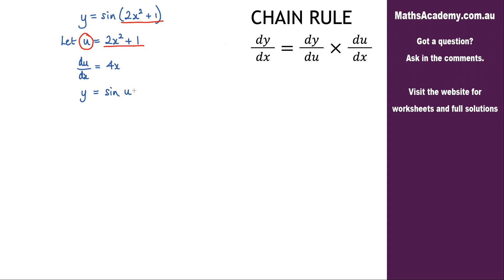And now I can differentiate this. So dy by du is equal to cosine of u. When you differentiate sine you get cosine.